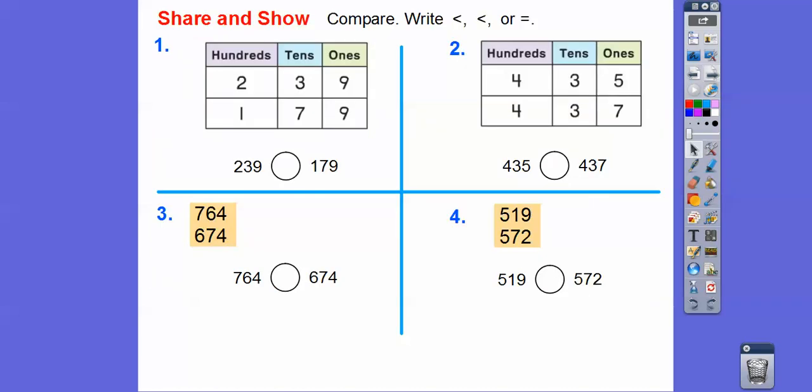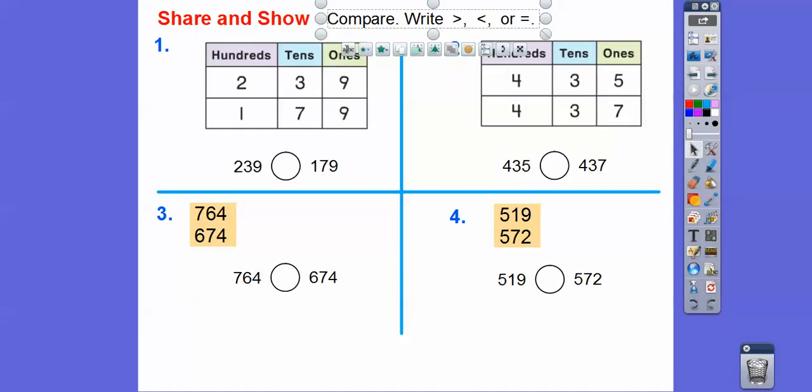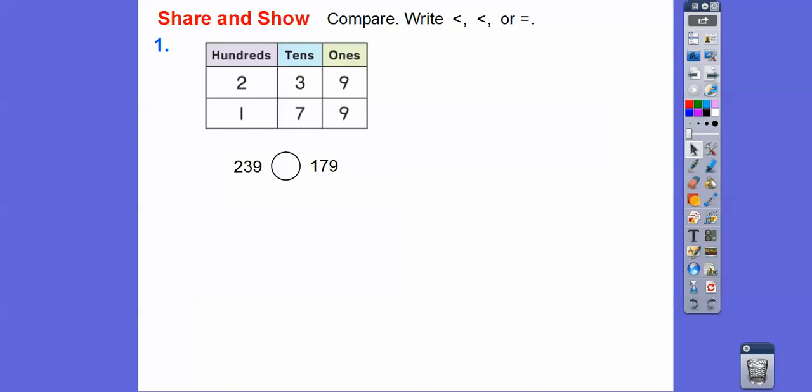So compare, write less than, greater than, or equal to. So let's look here. Two is greater than one, so that means 239 is greater than 179. So this is the greater number, so the open part of the arrow, the arrow always points at the smaller number right there. So it's greater than.